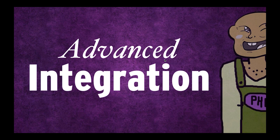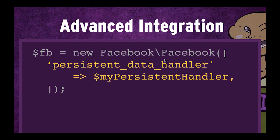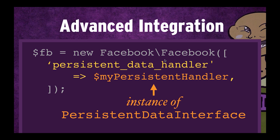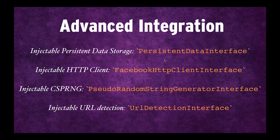So what if we wanted to integrate this really deeply into our web framework? There's a couple of options, but the one I want to point out is the persistent data handler. This is the thing that actually stores data into a session or persistent data. By default, the SDK is going to try to save it in a native session. You want to overwrite this with whatever your web framework uses — say you use Redis or whatever. There's a persistent data interface, and you just create an instance of that and send it in, and it'll be using your version instead of the native PHP version.